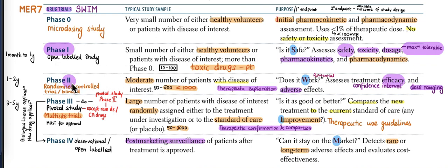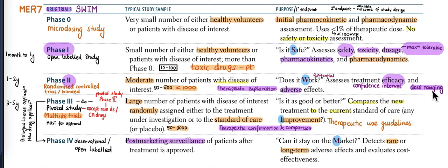Phase 2 is a randomized control trial and is blinded. You have a moderate number of patients — less than 1000 — that is important. This phase determines whether the drug is going to work: therapeutic exploration, treatment efficacy, adverse effects, and dose ranging are all determined in Phase 2.